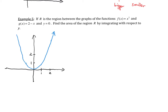I'll graph the parabola y equals x squared in blue — the curve comes up like this. Then in green I'll graph the line g of x equals 2 minus x, which comes down like this. The third boundary is y equals 0, which is just the x-axis. The region we want is bounded by all three of those curves.